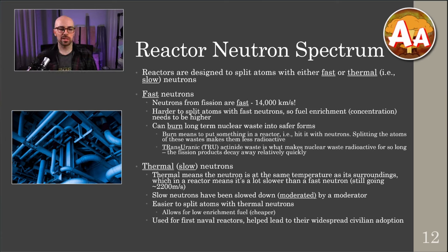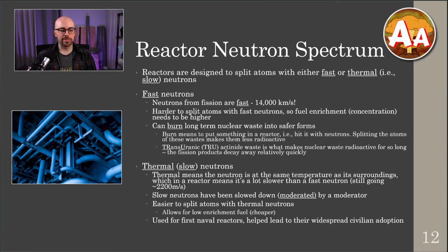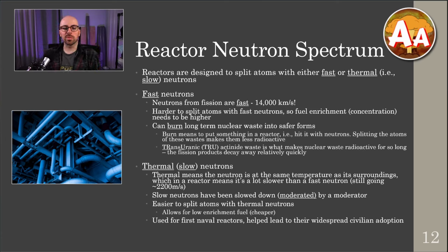When an atom first splits, the neutrons from that fission are going incredibly fast — 14,000 kilometers per second. They don't travel far with that speed; they generally only go maybe one, two, or three centimeters in the material because they rapidly collide with a bunch of atoms. In general, it is harder to split atoms with these fast neutrons — no different than if someone throws a ball at you really fast, it's hard to catch; throw it slow, it's easier to catch.